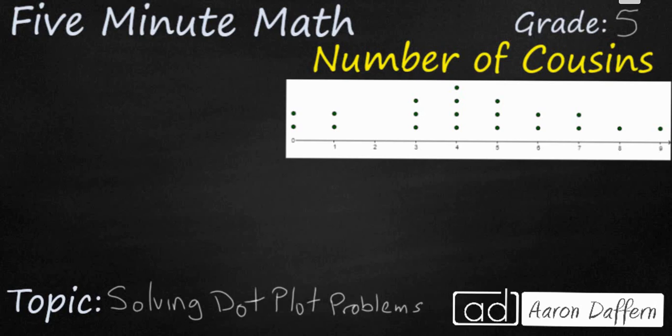Let's look at our first problem. Our first problem is a good way to make sure that we understand how to properly read a dot plot. When it asks how many students have three or less cousins we're going to be looking at the dot plot. Starting with our three we see that each dot represents one student's response.